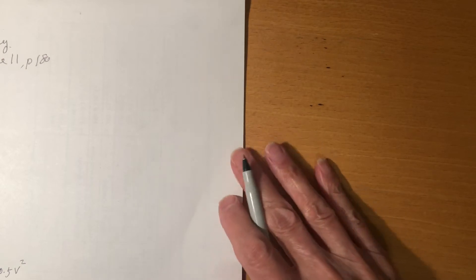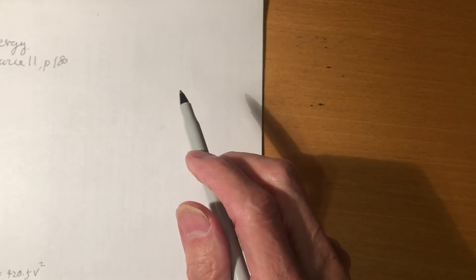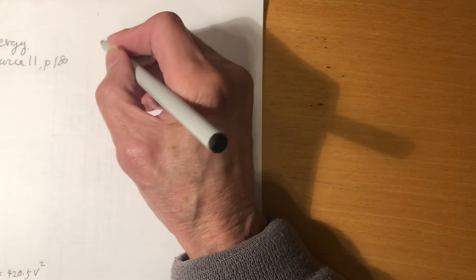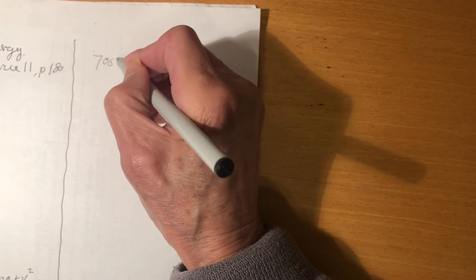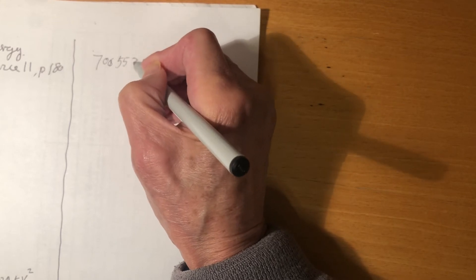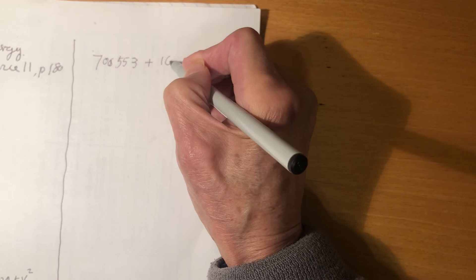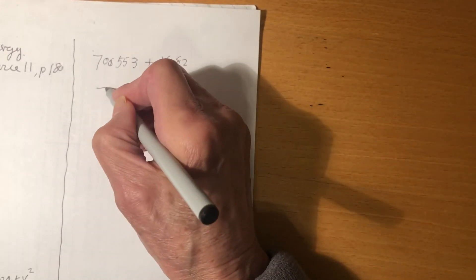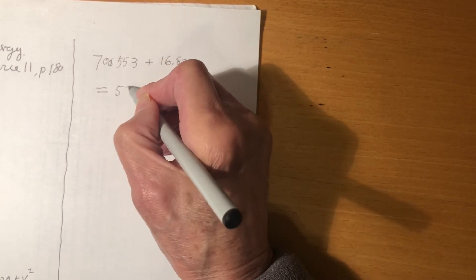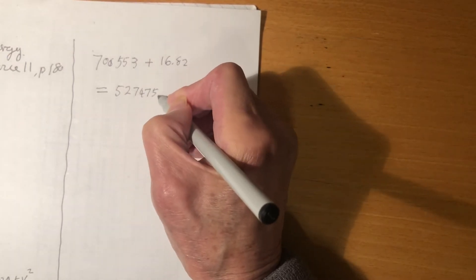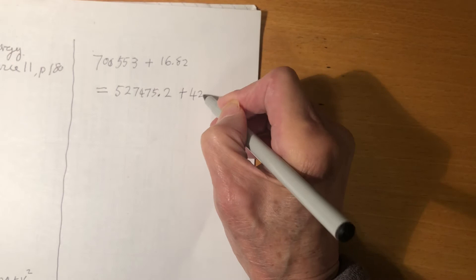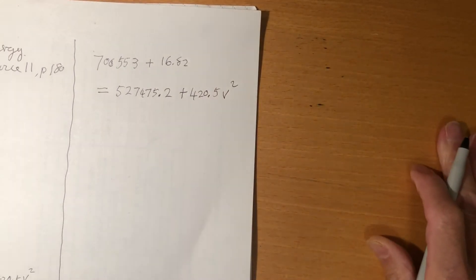Using conservation of energy: at position 1, gravitational energy plus kinetic energy equals at position 2, gravitational energy plus kinetic energy. Therefore: 700,553 plus 16.82 equals 527,475.2 plus 420.5 V squared. That's the conservation of energy equation, with only one unknown, V squared.